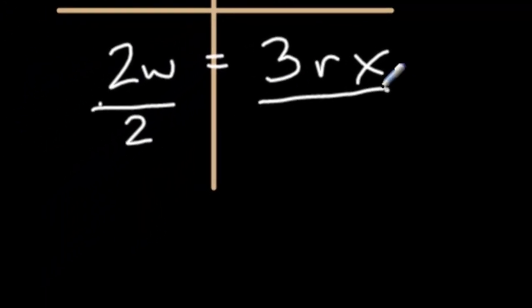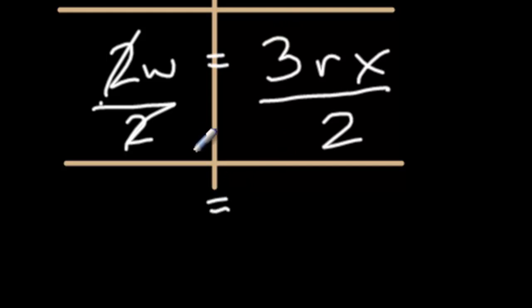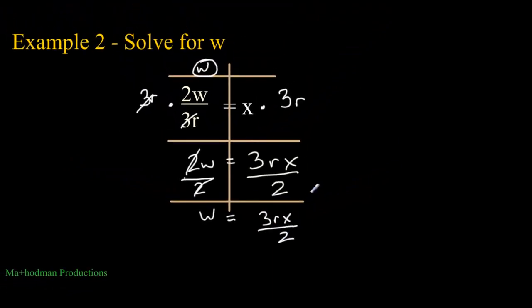My last step is to divide 2 to both sides, because 2 next to the w is multiplication, and to cancel that out is division. I'm left with the w on the left side equals 3rx over 2.